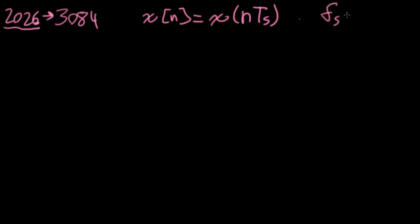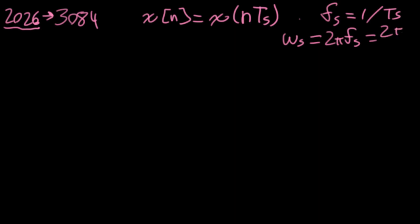Our sampling frequency is 1 over the sample period. If we wanted, we could express this in terms of a sample frequency in radians per second as 2π fS, or 2π over capital T sub S. Let me make that S a little bit lower so you don't get the impression that it's two different variables multiplying each other — that S is a subscript.